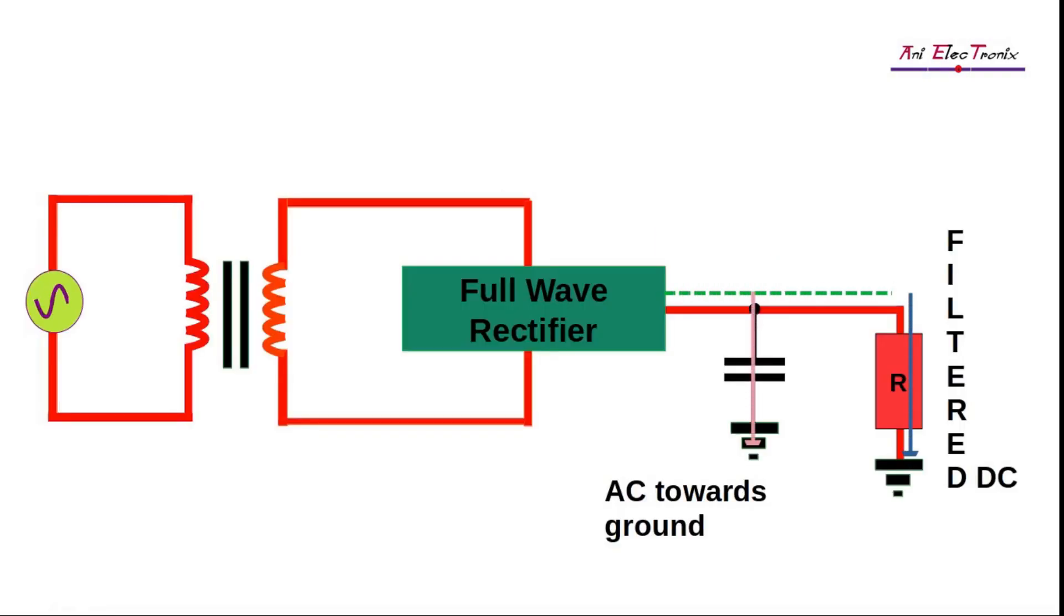If we fix a capacitor parallel to the output of a rectifier, the AC component will be fed through the capacitor and we get a filtered DC version. Let us now understand the working principle of the capacitor filter.